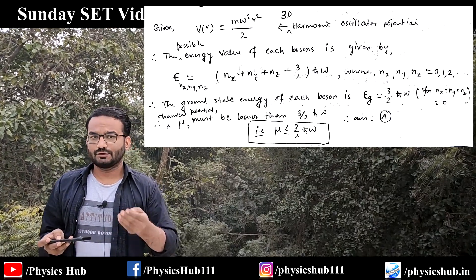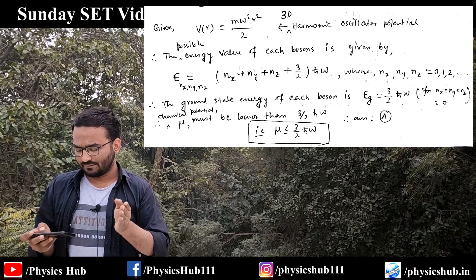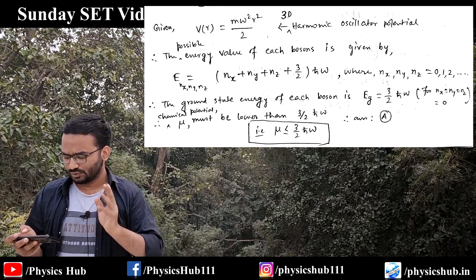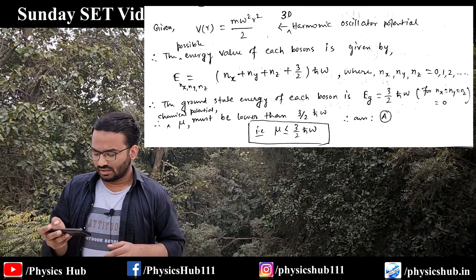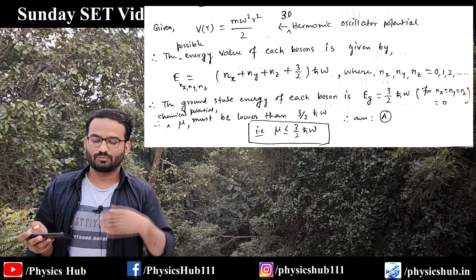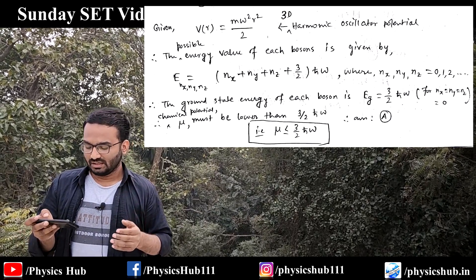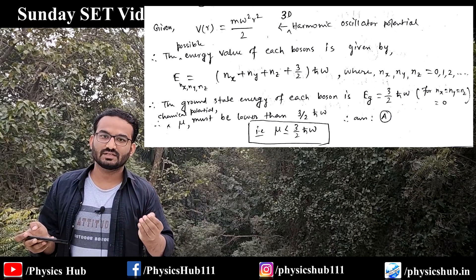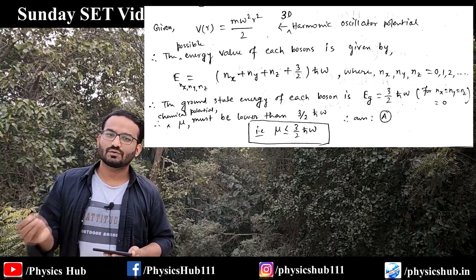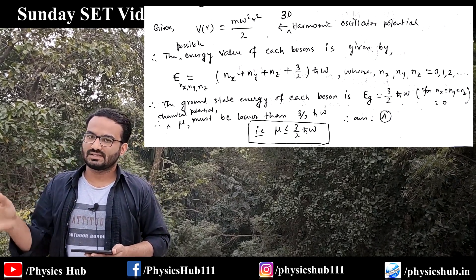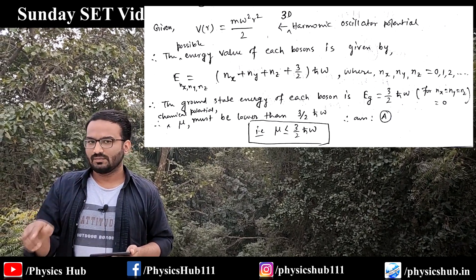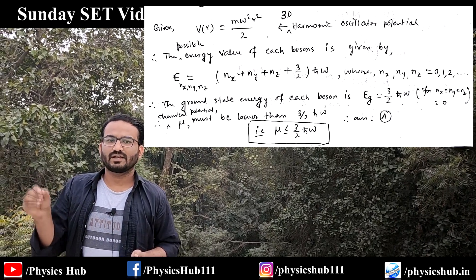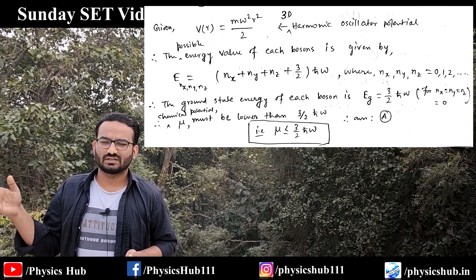The solution: the given potential V(r) is basically a three-dimensional harmonic oscillator potential. Therefore the possible energy for such a system is given by E(n_x, n_y, n_z). Since the potential is given in terms of r, we consider n_x, n_y, and n_z together, so the energy becomes (n_x + n_y + n_z + 3/2)·ℏω, where n_x, n_y, n_z are zero, one, two, three — non-negative integers.